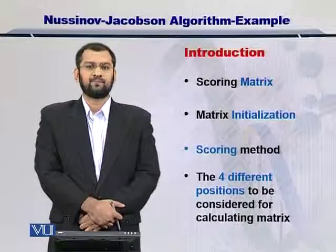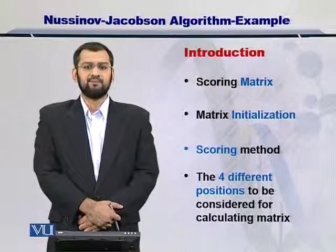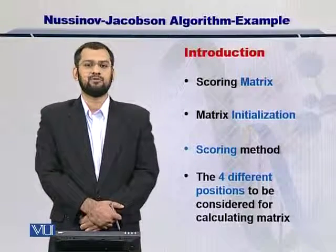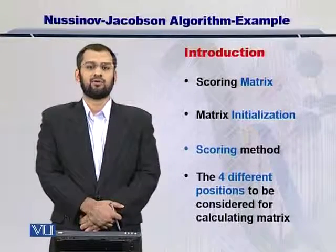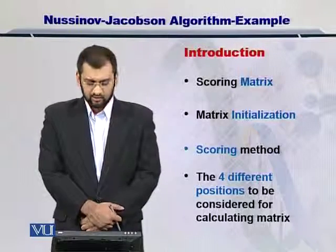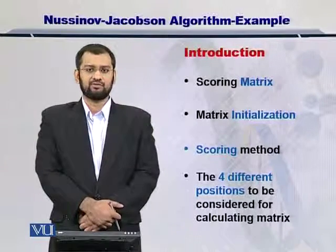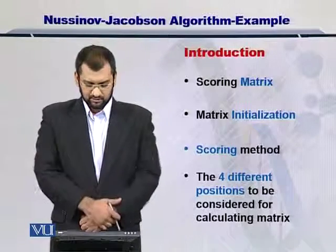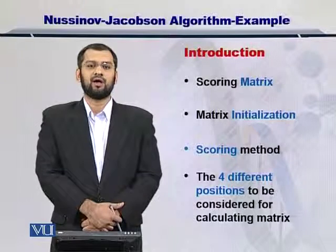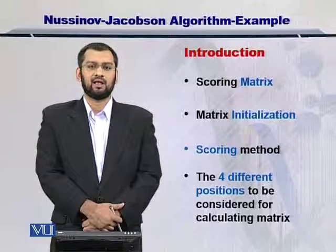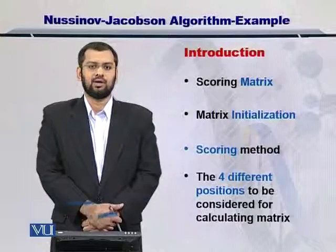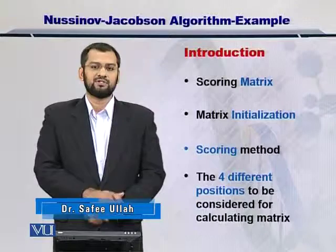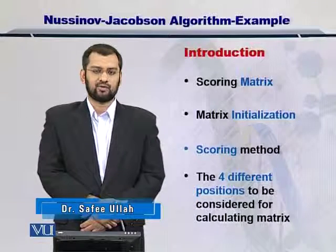As you would know, before starting with the NJ algorithm, you need to have a scoring matrix with you, which you will fill up during the process of the algorithm. Secondly, you need to initialize this matrix — the diagonal and the lower triangular diagonal. Then you would want to have a scoring scheme that can help you score the coupled nucleotides, as well as the four positions required by the scoring scheme.